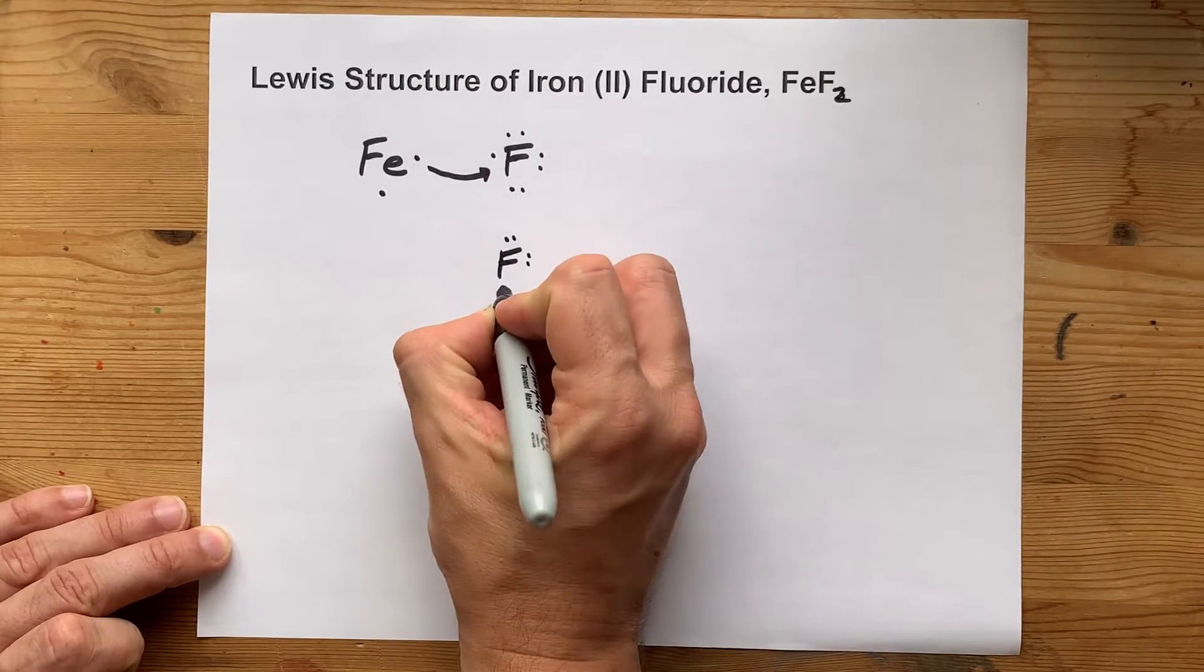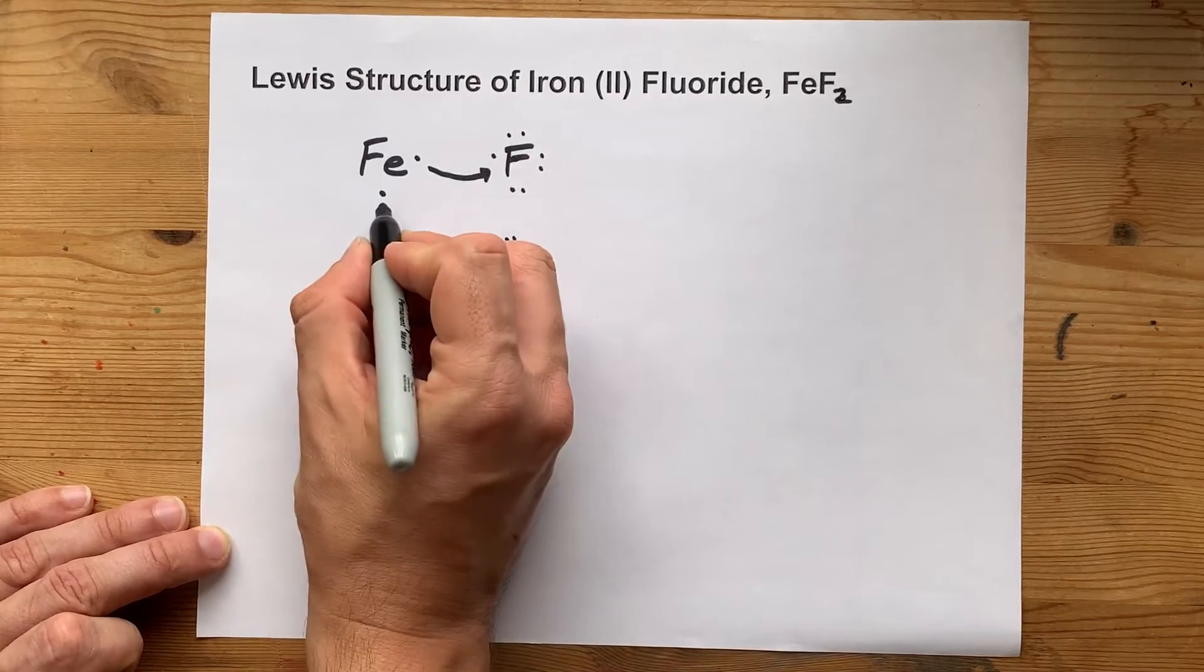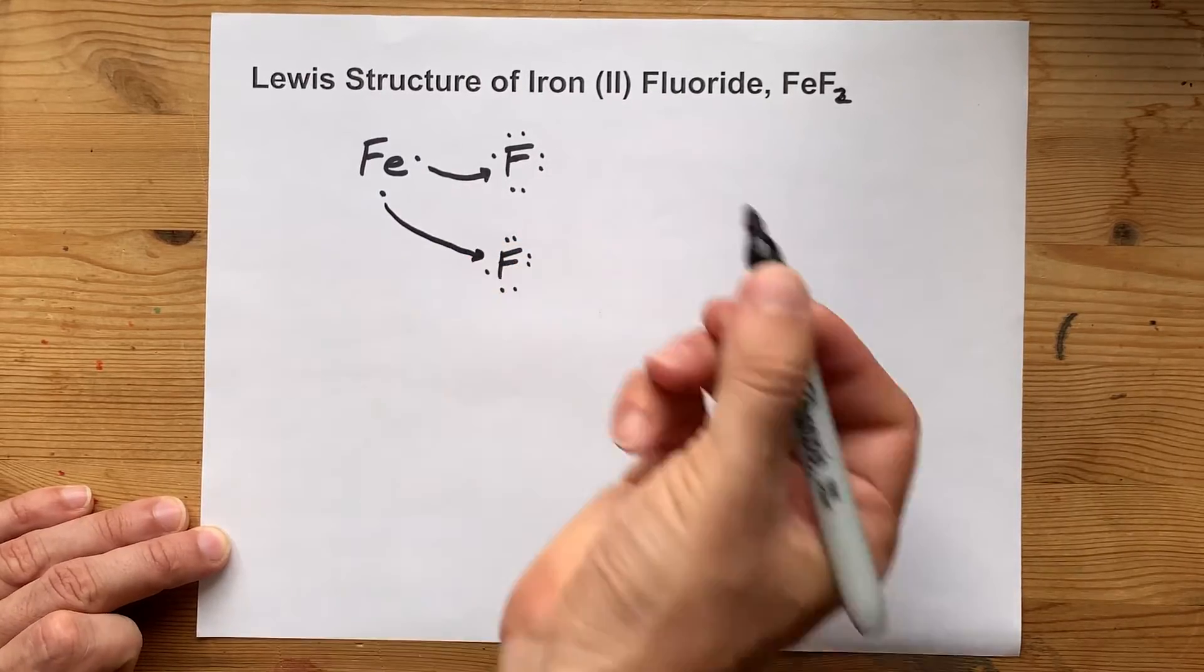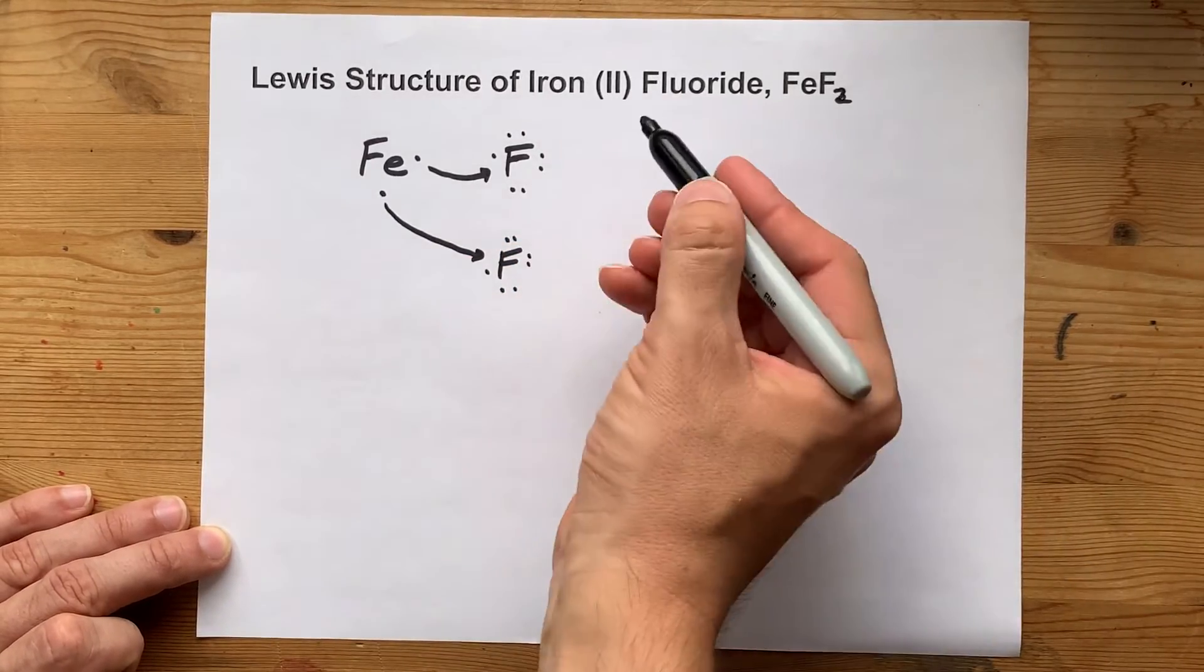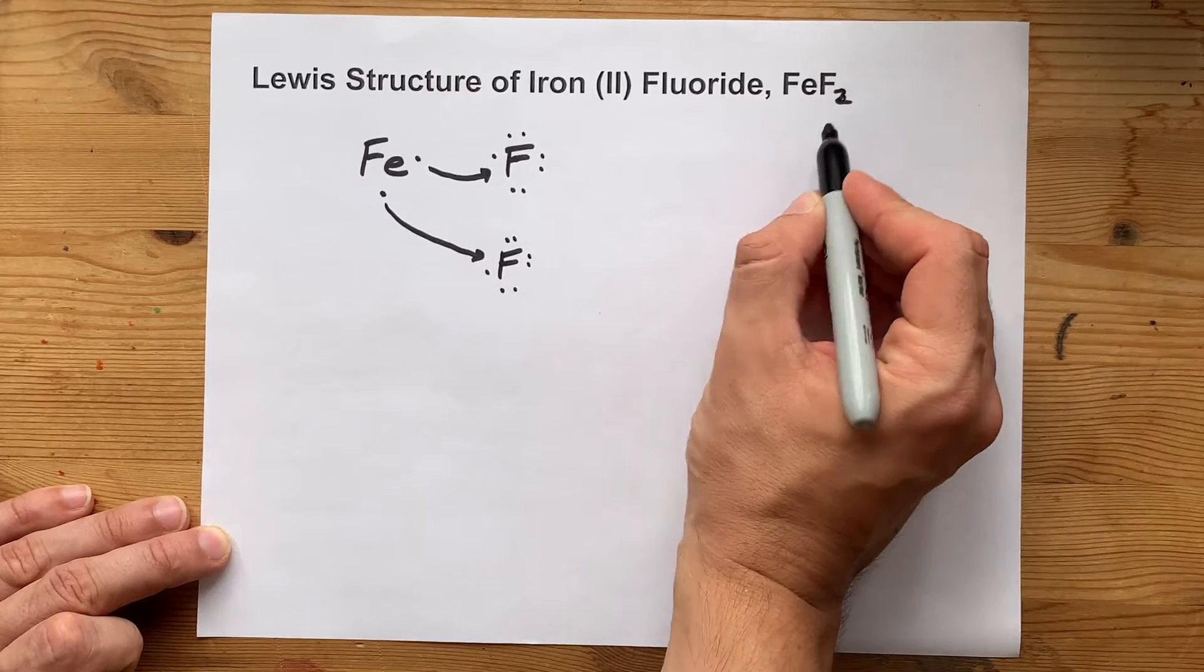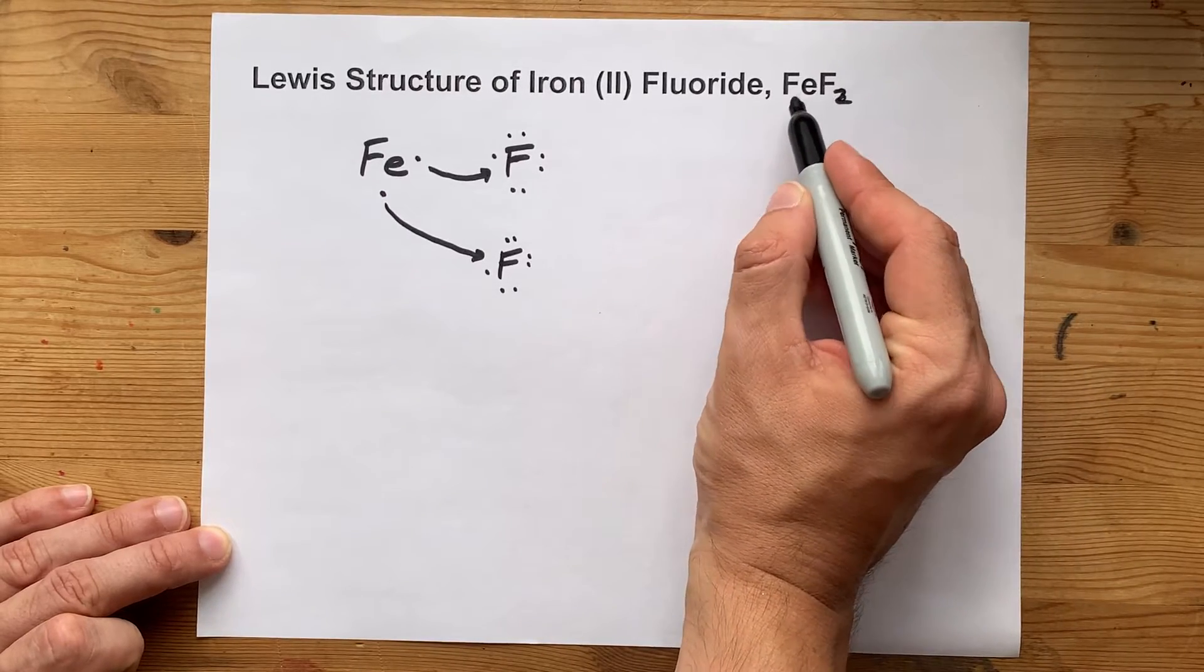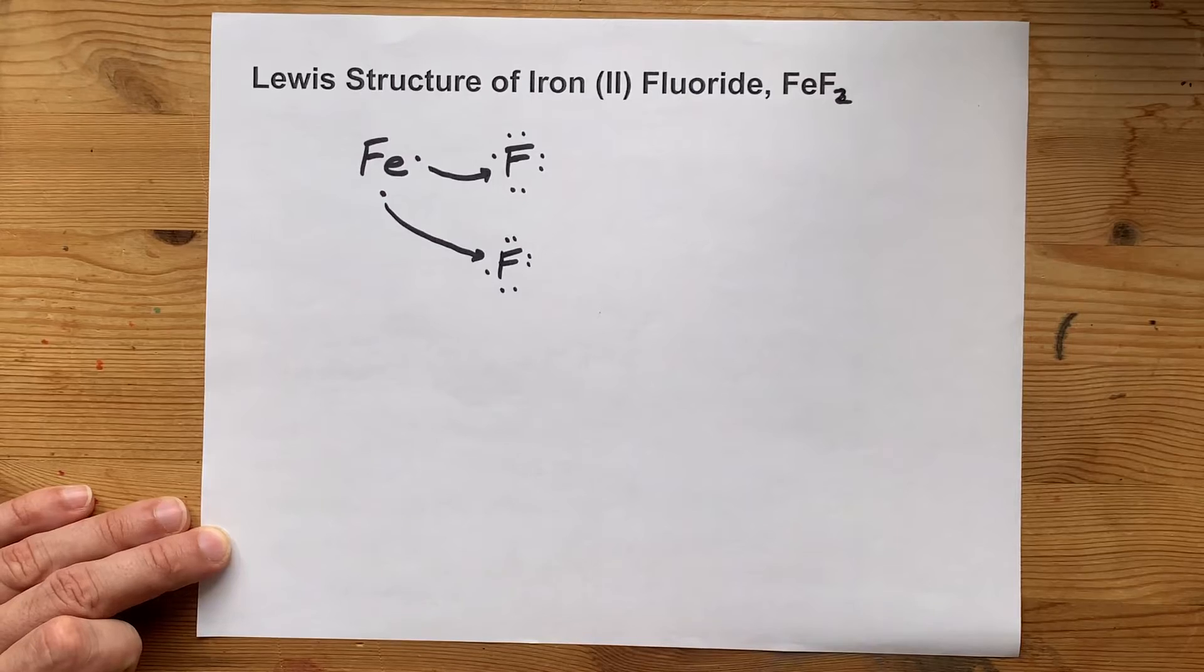We're going to need another, or second, fluorine to absorb the second electron. This is why the formula for iron to fluoride is FeF2. You need 2 fluorines to absorb the electrons that the iron is giving away.